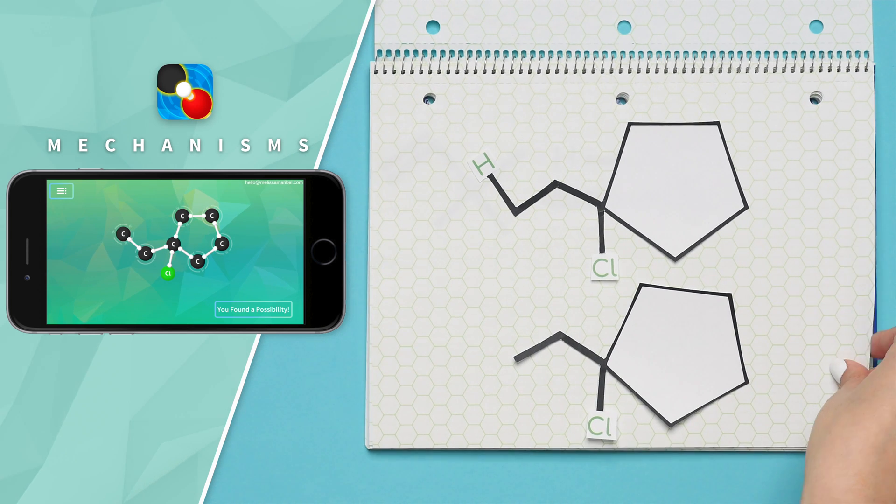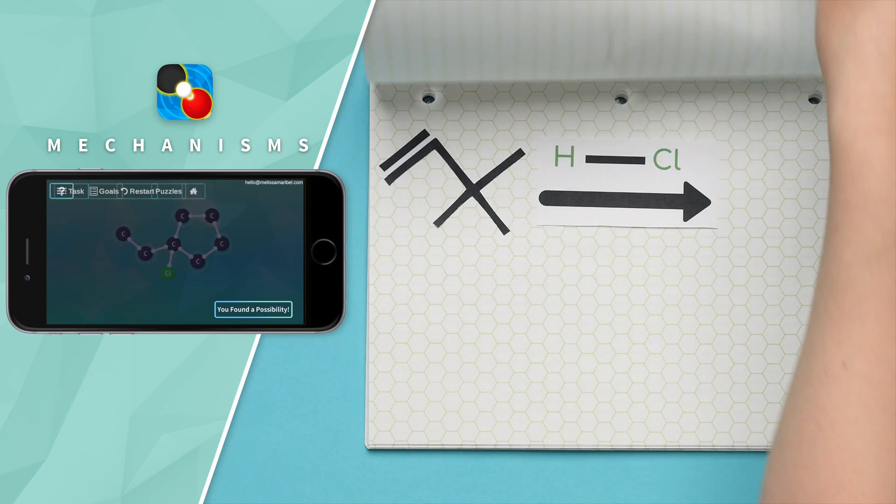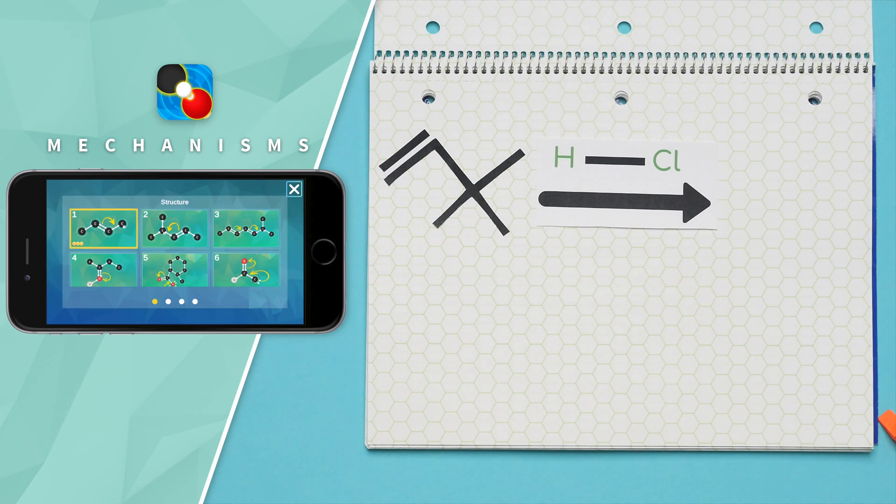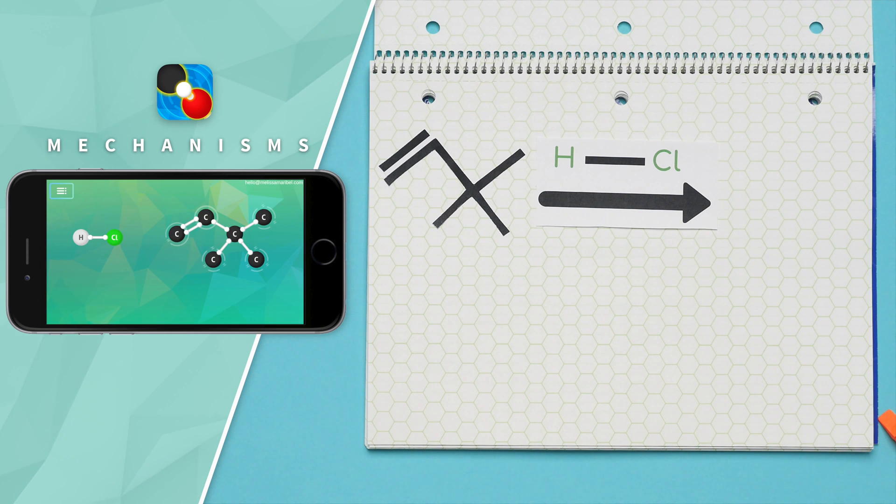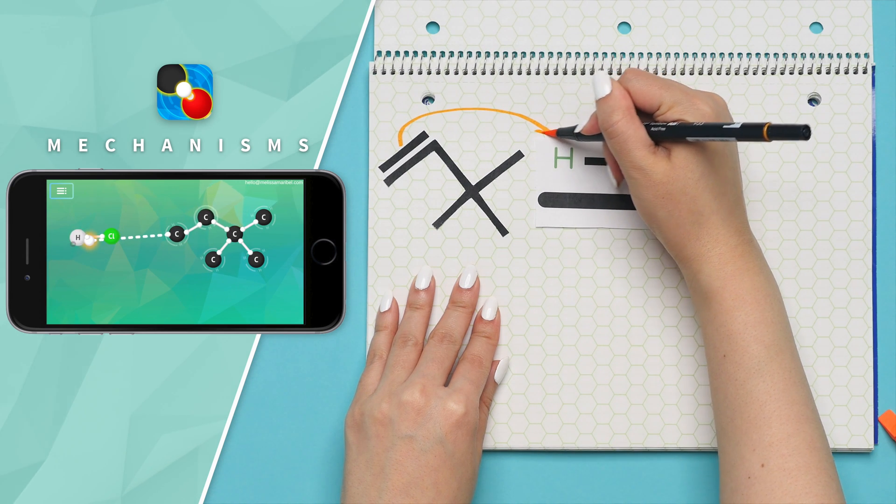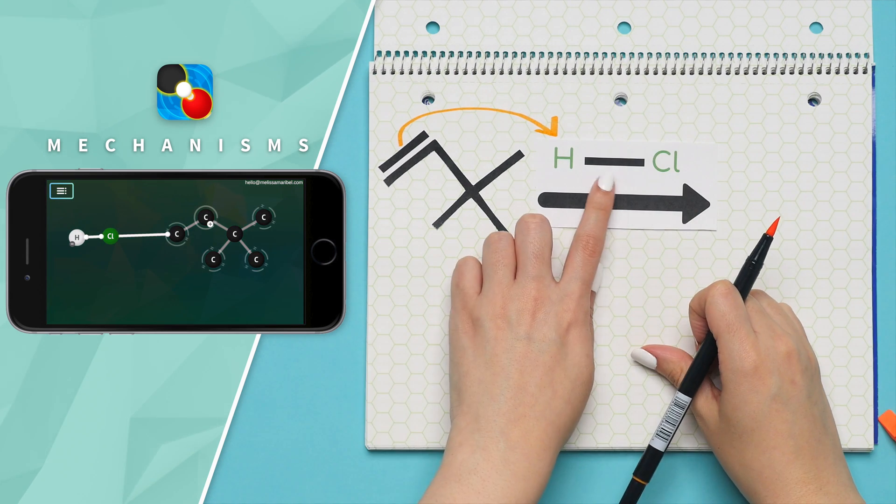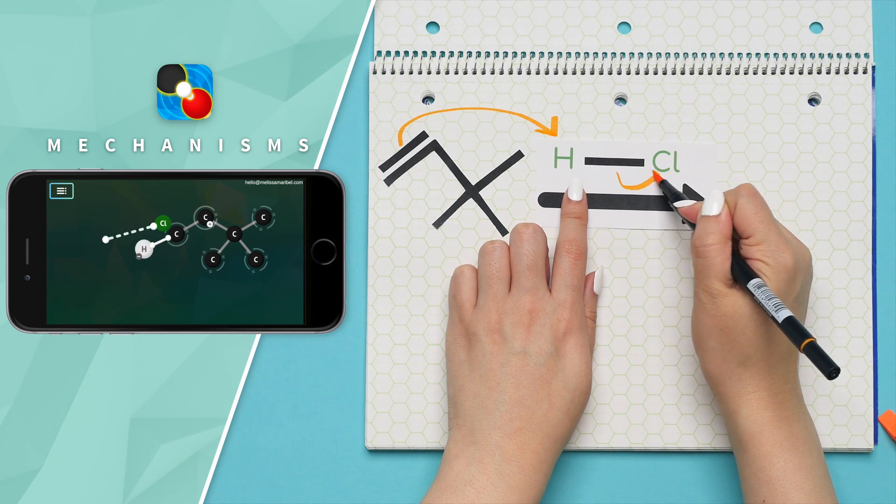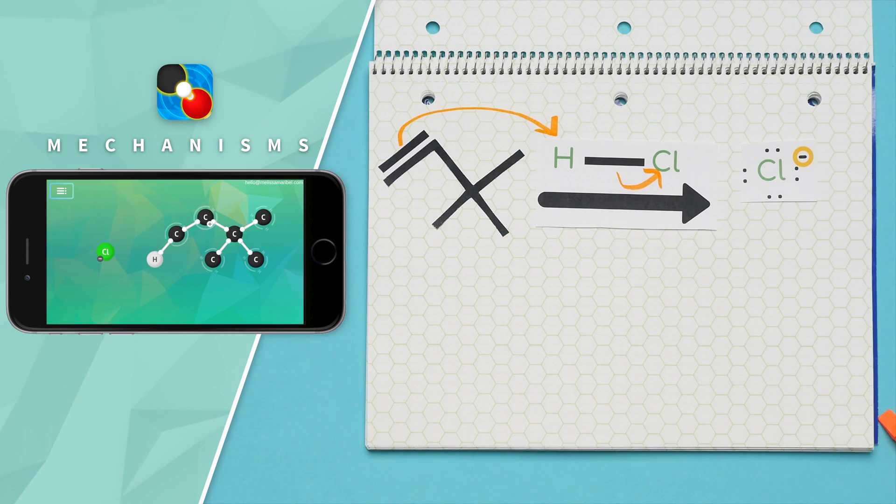If you're following along on the Mechanisms app, the next example of a methyl shift is number seven under the third section under addition. Step one is protonation. So our double bond is our nucleophile, and it reaches out and grabs our electrophile, which is hydrogen. The electrons in this bond now go to the chlorine, making it have a negative charge.